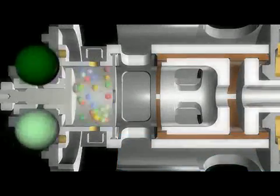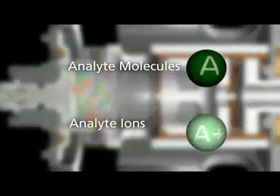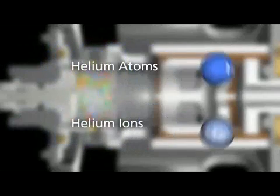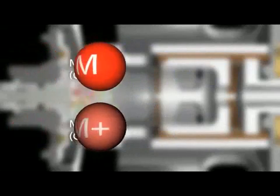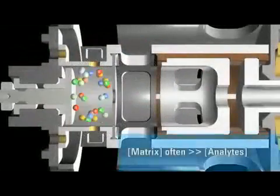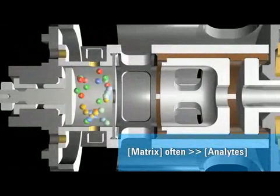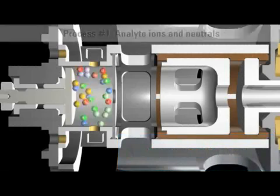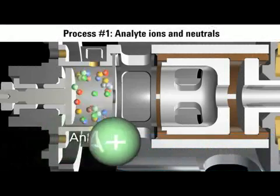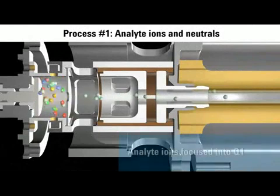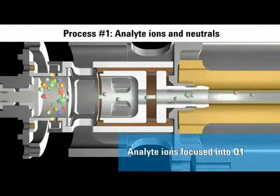So a thorough description must include analyte neutrals and ions, helium neutrals and ions, column bleed neutrals and ions, and many more neutrals and ions from the matrix at concentrations typically higher than the analyte. To simplify the description, let's start with the analyte molecules and ions. Analyte molecules enter the vacuum source from the GC capillary column and begin bouncing off the hot surfaces of the source.